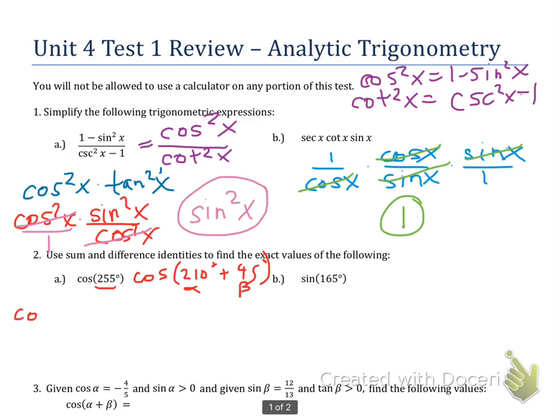So the identity now becomes cosine of 210 times the cosine of 45 minus the sine of 210 and the sine of 45.